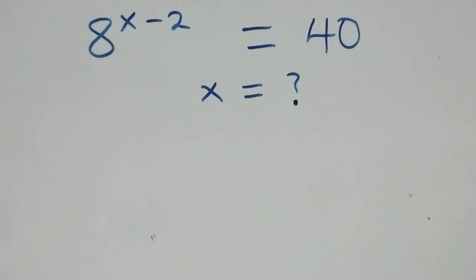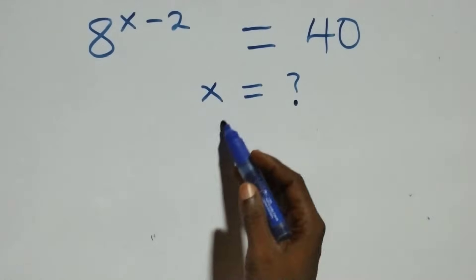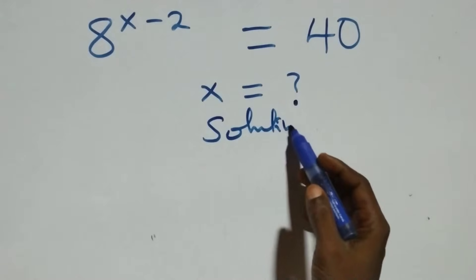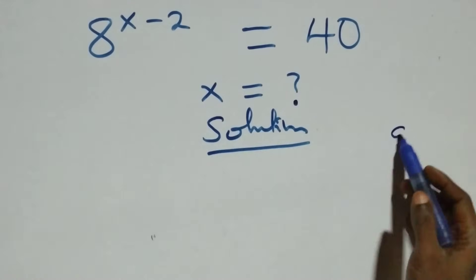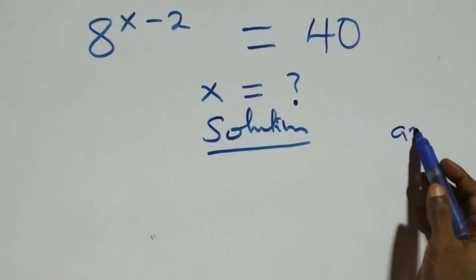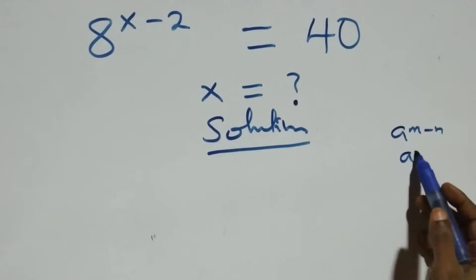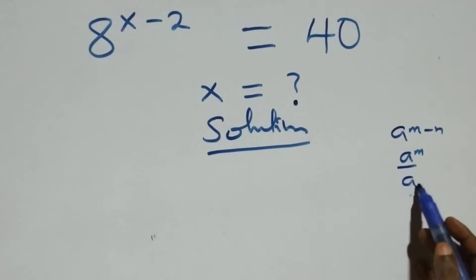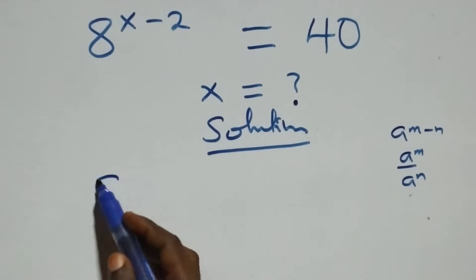Hello, you are welcome. Here we solve a nice exponential equation. We use the rule that a raised to power n minus n equals a raised to power n over a raised to power n.